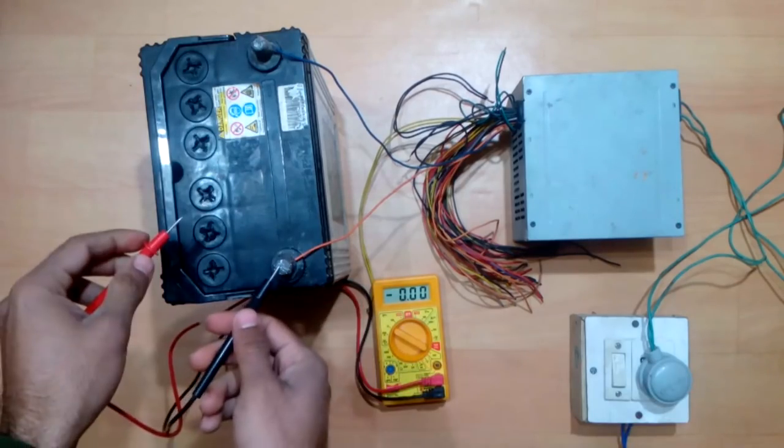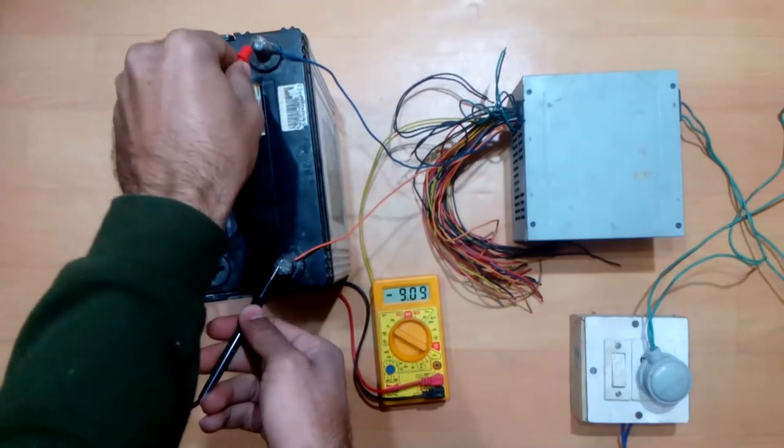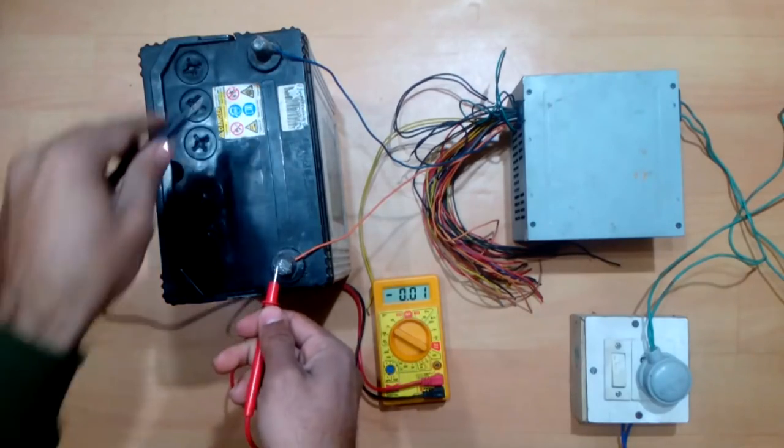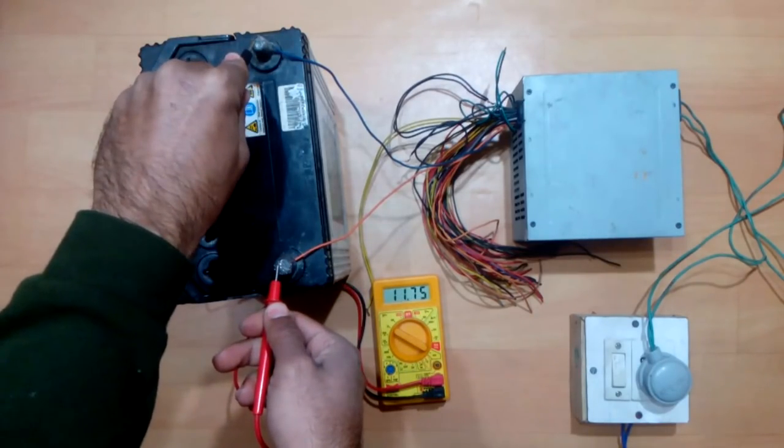When I start charging the battery, the potential difference across the circuit is around 11.7 volts. And now we will leave this circuit as it is for the next eight hours.